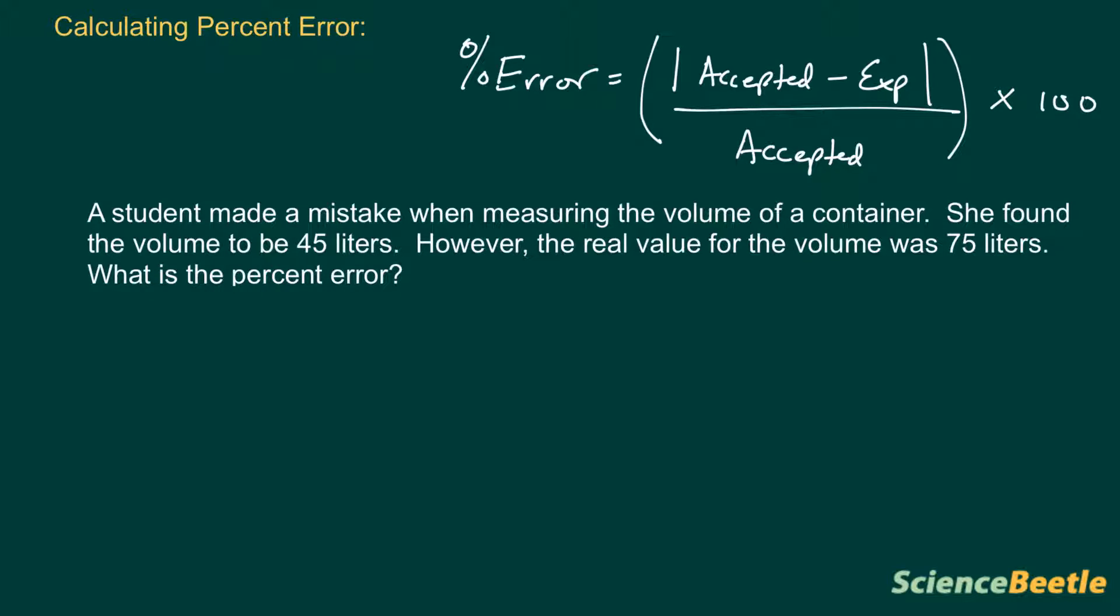We've got to first, before we even start here, try to find the parts in this: which is the accepted value and which is the experimental value. You should always look at any numbers that are given to you in any problem set. Notice we've got a number right here with 45 liters and another number over here with 75 liters. Let's underline those because those are going to be very crucial for us.